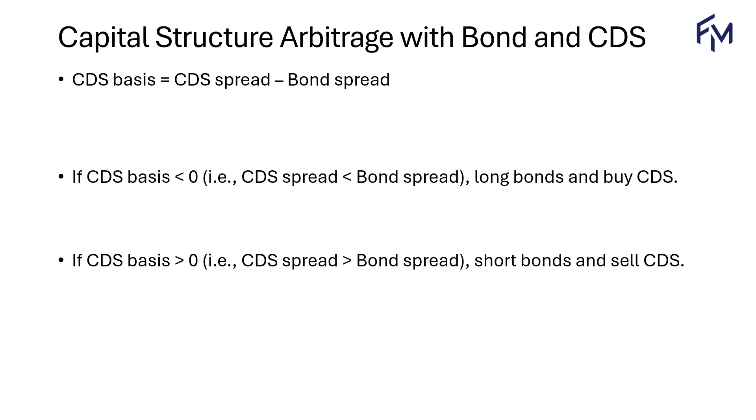The CDS basis is the CDS spread minus the bond spread for the same issuer. In equilibrium, the CDS basis would be equal to zero, which means that the spreads in the CDS and the bonds should be the same. But in practice, the CDS basis can be positive or negative due to differences in market expectations between the participants and the differences in valuation.